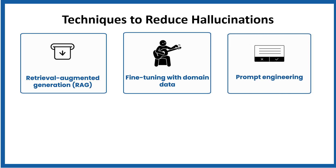Prompt engineering can reduce hallucinations. Carefully crafted prompts can reduce ambiguity. For example, instead of asking 'tell me about the energy uses in India,' ask 'based on official reports from 2022, what was India's percentage of renewable energy use?' The benefit is it guides models towards grounded answers. The drawback is it is user dependent and doesn't fix root issues.